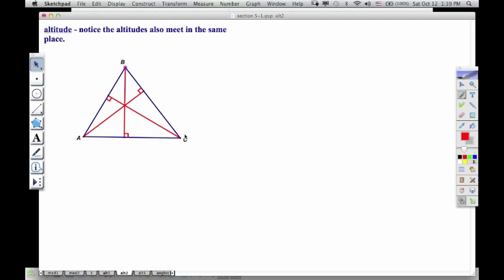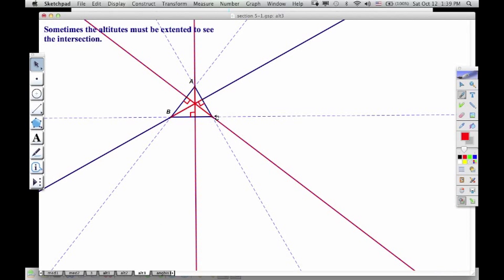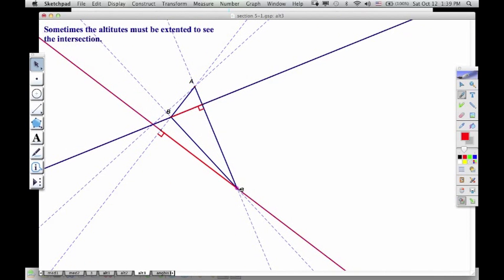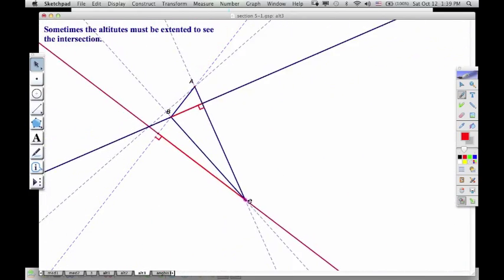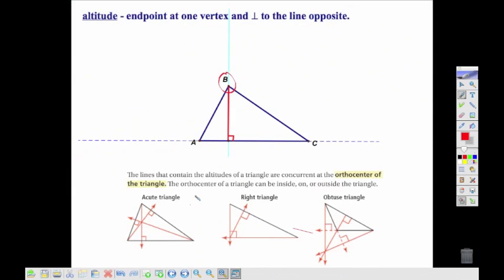Now we can also draw all three of those altitudes inside of there, and notice that all three of those altitudes meet in the same place, so they are concurrent. Now we can also notice that they might sometimes meet outside of the triangle. So we call this point the orthocenter of our triangle, the place where the altitudes meet. This could happen inside the circle. If it's a right triangle, it could happen on the circle. And if it's an obtuse triangle, it will happen outside of the circle.